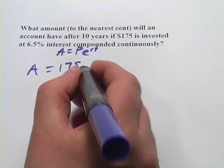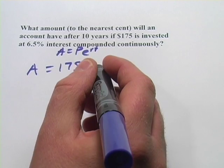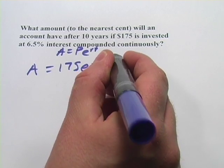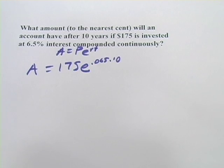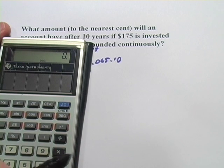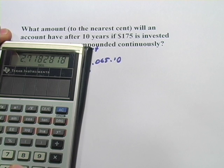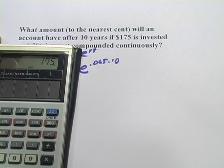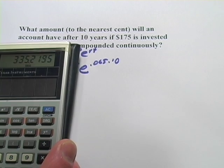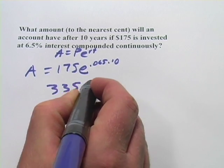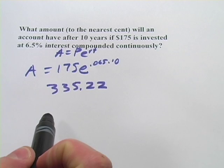So we'll have our principal, 175, times E to the rate, which is 6.5, which is 6.5, so that's 0.065, times T, which is 10. So we'll take E to the 0.65 power, times 1.75, and we get $335.22. Not bad for investing $175 for only 10 years.